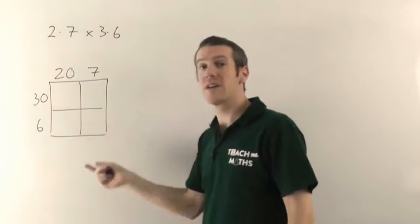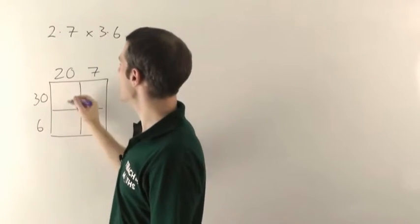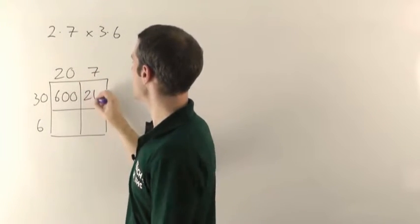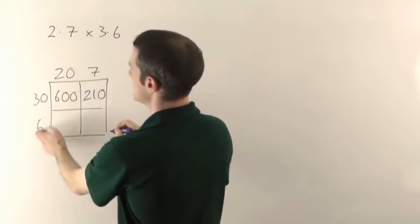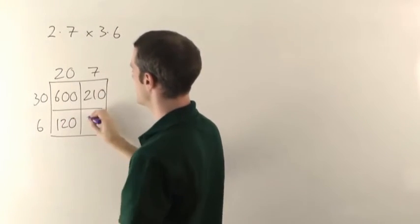So I'll do this quickly. You can watch the grid multiplication video if you want to see the details of this. So 30 times 20, well 2 threes are 6, plus 2 zeros. 3 sevens are 21, and I've got 1 zero. 6 times 2 is 12, 1 zero. And 6 times 7 is 42.